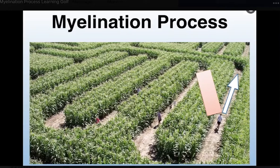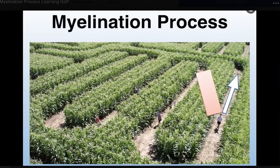The key to understanding motor learning is to know that the original pathway, where the white arrow is, is always going to be there. So it's never about creating a new program. What it's about is creating a program that's more dominant than the old. This gentleman walking down should find it easier to turn left and go diagonally than straight on — and that's the goal of motor learning.